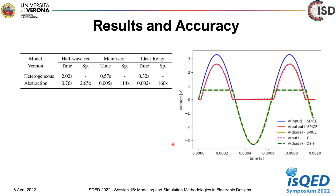We have validated our methodology on three piecewise linear models: a half-wave rectifier, a memristor, and an IJ-relay. We first simulated the Verilog-AMS code, then simulated the C++ abstracted code using test benches. The simulation of the C++ code of the half-wave rectifier shows a speedup of around 2.65 times. For the memristor, it achieved a speedup of 114 times. And for the IJ-relay, a speedup of 160 times.